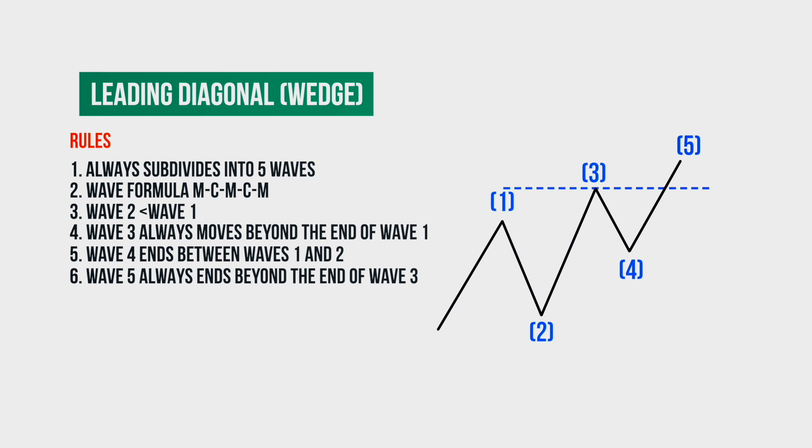Sixth rule, wave five of the leading diagonal is never truncated and always goes above the end of wave three. We remember that in the impulse the fifth wave could be truncated, but in the leading diagonal it is impossible.